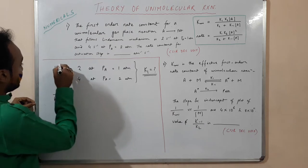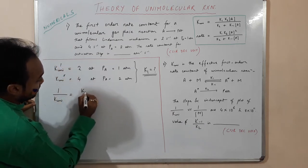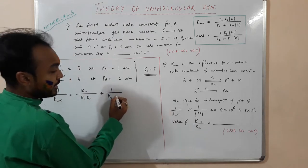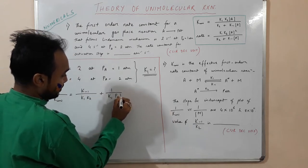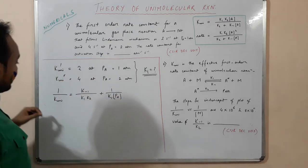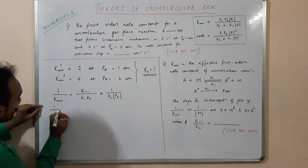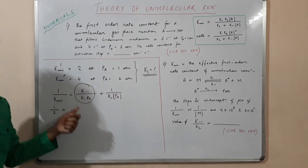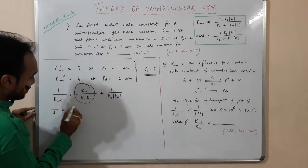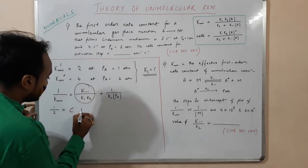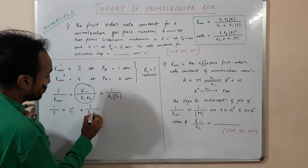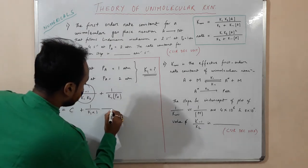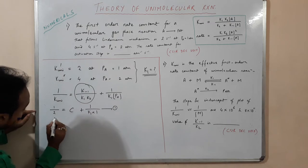Taking the reciprocal, 1/K_uni = C + (1/K₁)·(1/P), where C = K₋₁/(K₁·K₂) is a constant. Substituting the first data point: 1/2 = C + (1/K₁)·(1/1). This is our first equation.